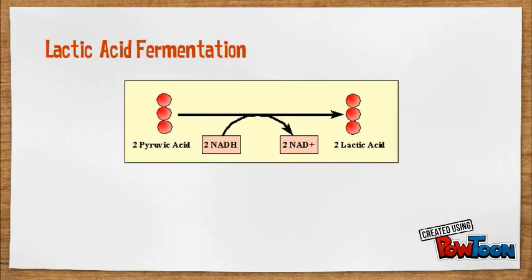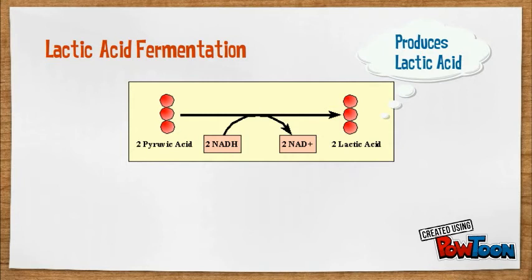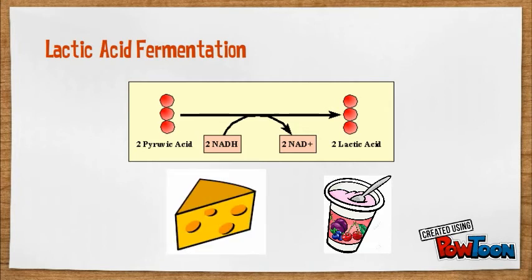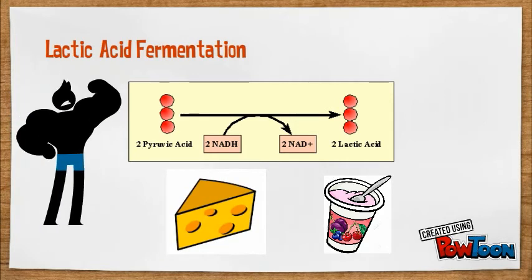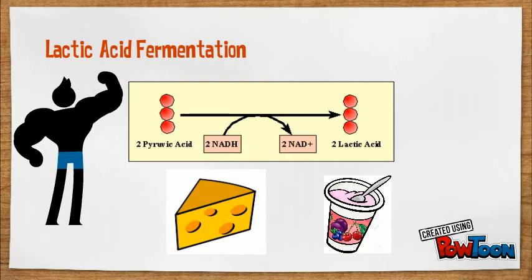One type of anaerobic respiration is called lactic acid fermentation, where pyruvate is converted into lactic acid. Lots of different types of organisms use this, including bacteria. Yogurt and cheese are made from lactic acid fermentation, and it also is what causes your muscles to become sore after you work out.